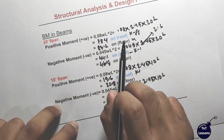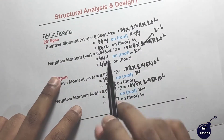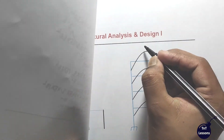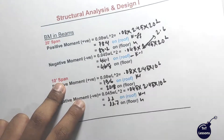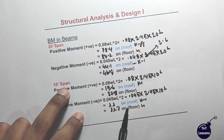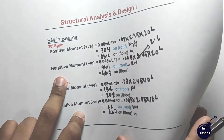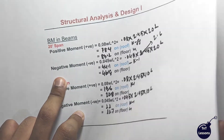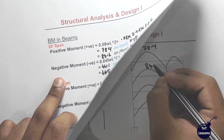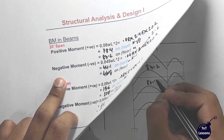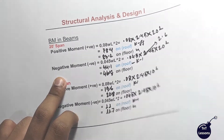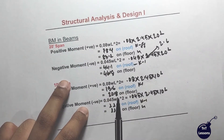This is 78.4 — this is the maximum positive moment. And the rest of the diagram was 83.2. And there was also 83.2.